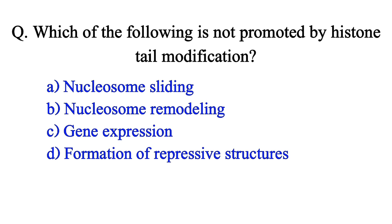Which of the following is not promoted by histone tail modification? Option A: nucleosome sliding. Option B: nucleosome remodeling. Option C: gene expression. Option D: formation of repressive structure. The correct answer is Option A: nucleosome sliding.